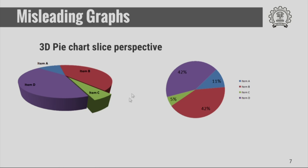Now we are going to learn about misleading graphs — the idea is to show you how to avoid them. For example, somebody has shown data using a 2D pie chart and a 3D pie chart. In the 2D pie chart, item C is 5 percent and item A is 11 percent. However, when the same pie chart is shown in 3D with perspective, the proportion of item C, although it is only 5 percent, appears equal to item A which is 11 percent. This is an example of a misleading pie chart and you should avoid this kind of representation.